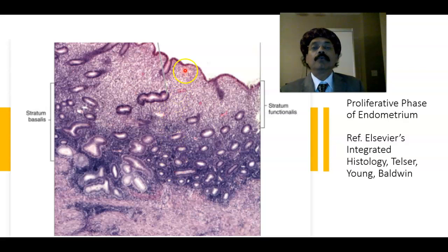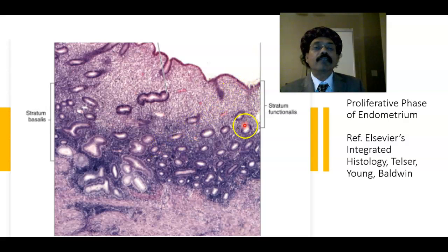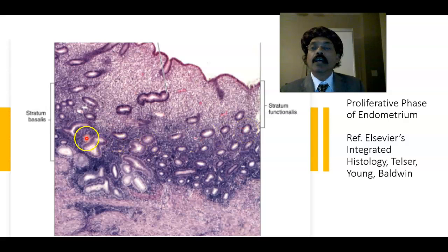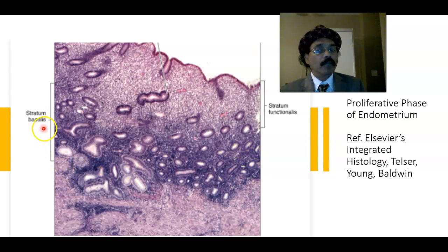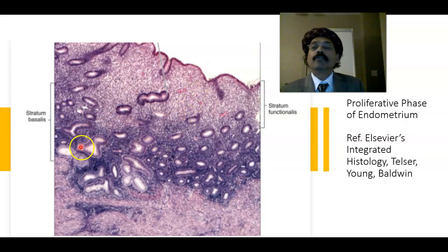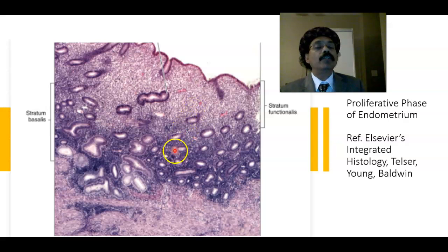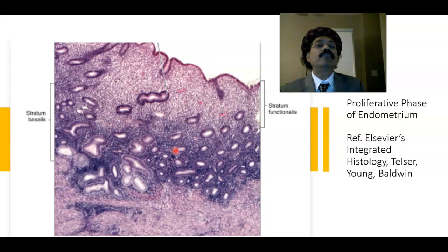The stratum functionalis layer is shed during menstruation, and from the basal layer the endometrium regrows. In the proliferative phase, the endometrium may be around 3 mm; after menstruation it may be only 0.5 mm; and during the secretory phase it may be around 5 mm.